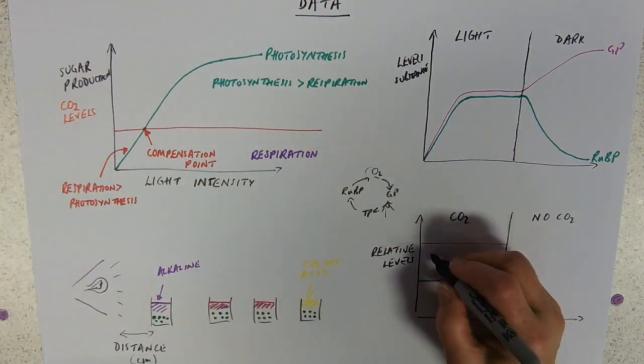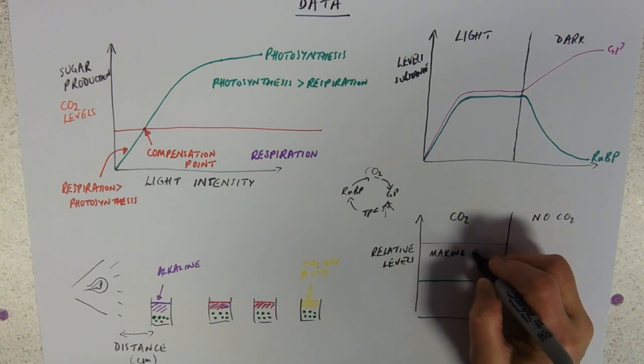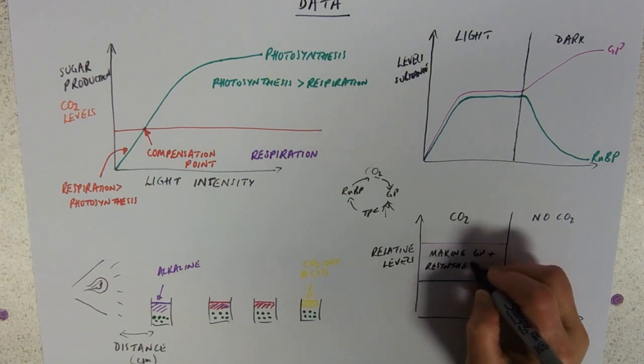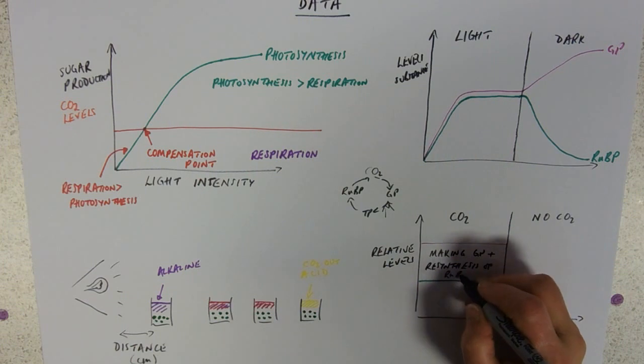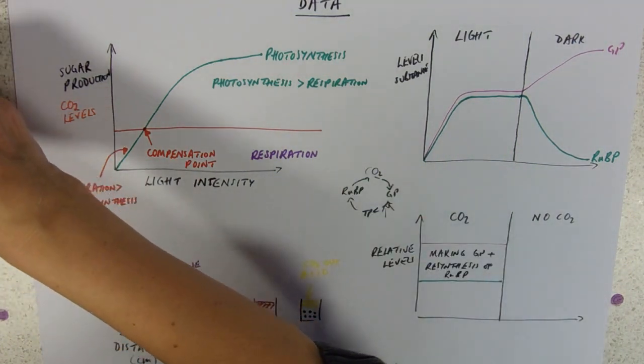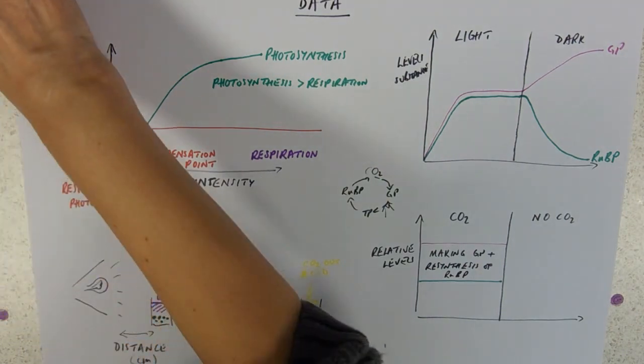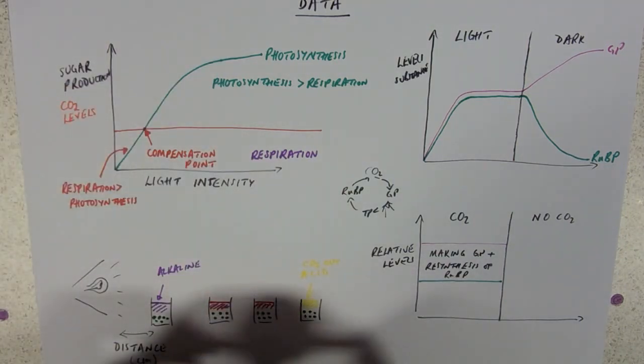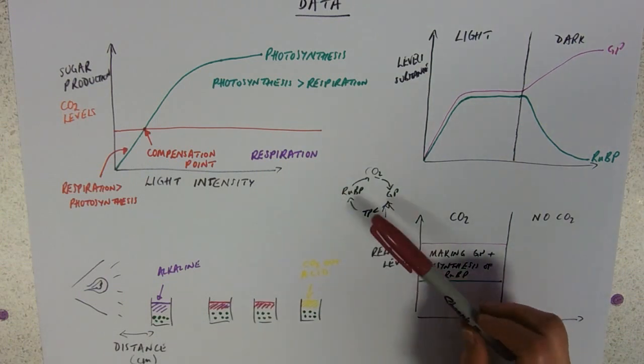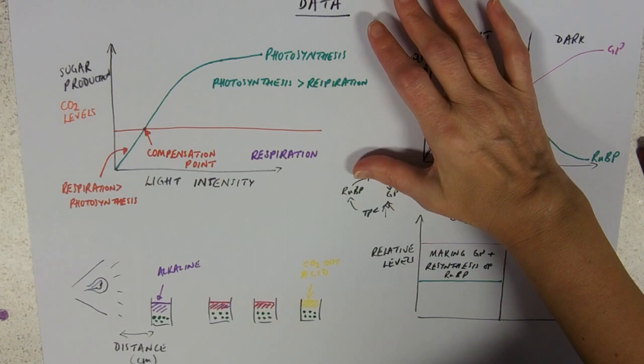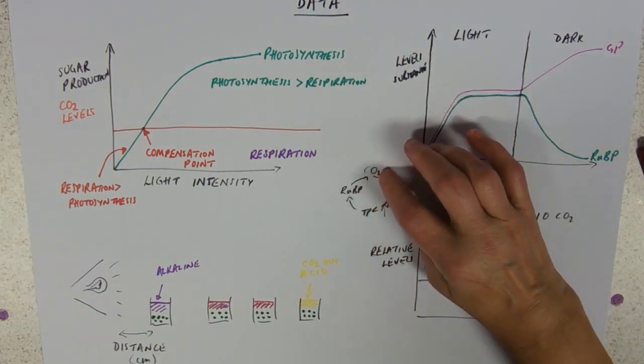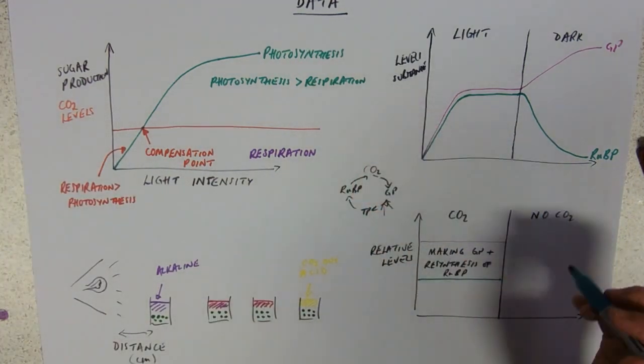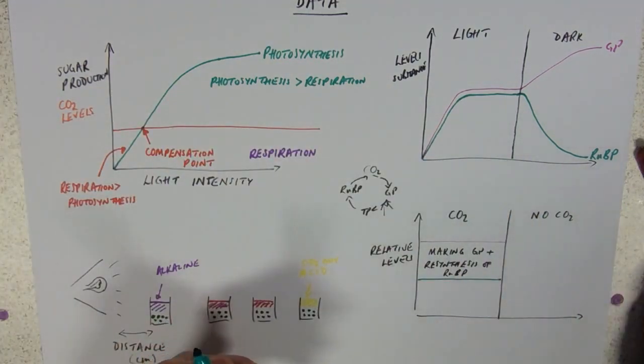So here, we're making GP and resynthesizing RUBP. And they're pretty much, that's going to, whatever's being used is being used to resynthesize. When we switch the carbon dioxide off, what's going to happen? Well, we're going to run out. If we stop that bit, then the RUBP has nothing to accept. And so our levels of GP should go down because we can't make any GP.